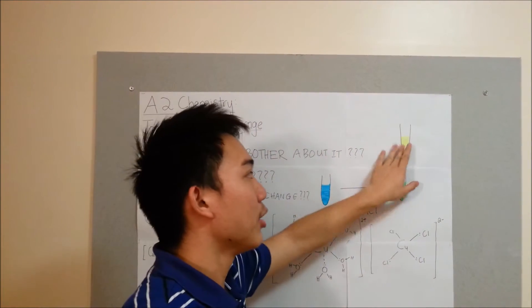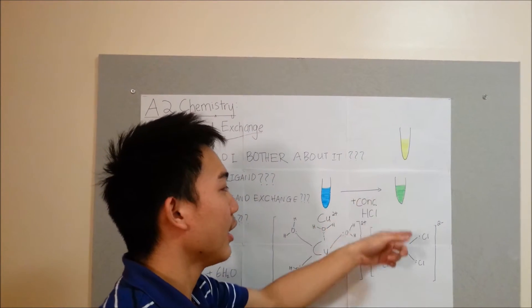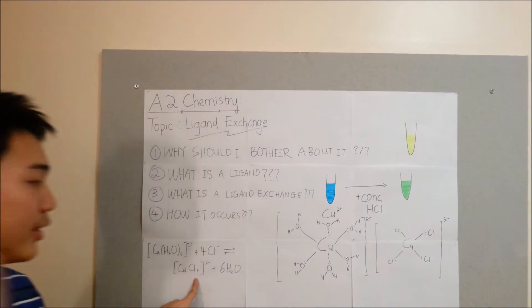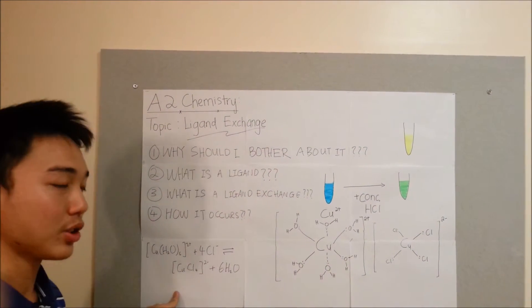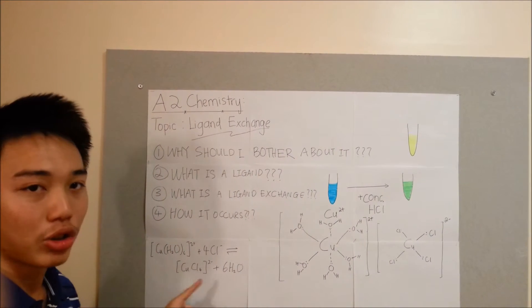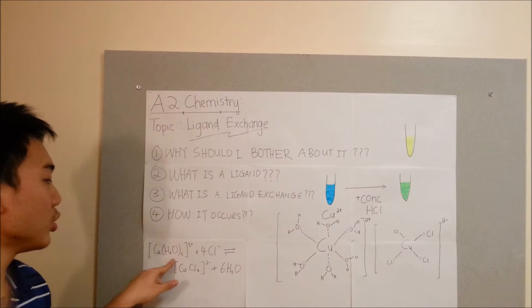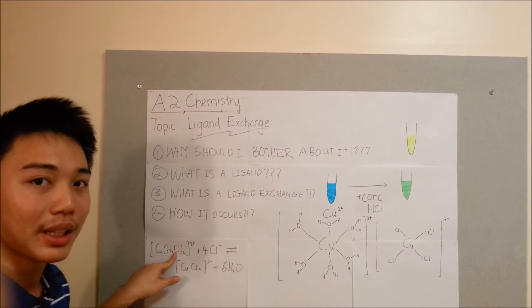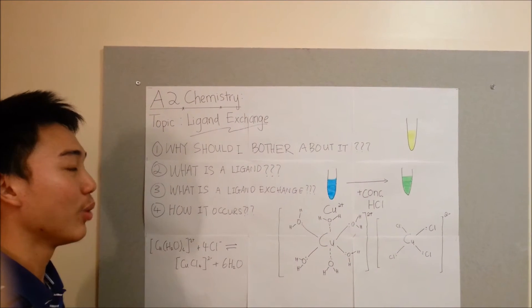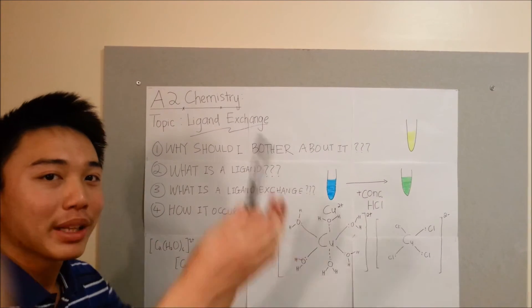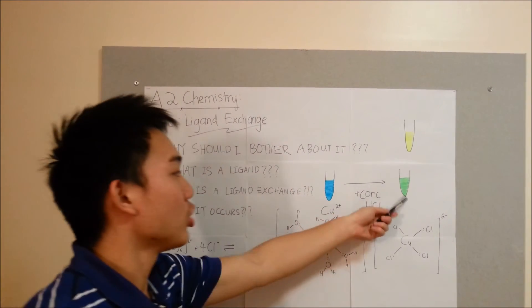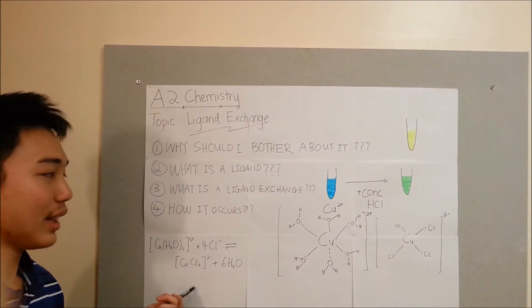Supposedly, it is supposed to change to yellow. But why not yellow? It's because this reaction is a reversible reaction. It will not go to completion. This means that there will still be some Cu(H2O)6 2+ complex ions inside the test tube. That's why when blue and yellow mix together, it can actually change to green color. So this is the ligand exchange.